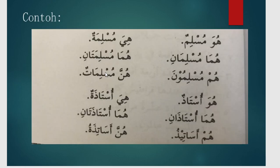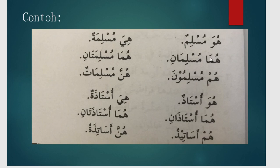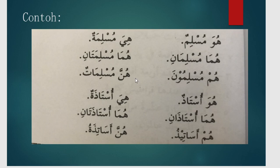Adapun contohnya: Hua muslimun — dia seorang muslim. Ini bentuk kalimatnya mufrad. Bentuk musannanya adalah huma muslimani — mereka berdua adalah dua orang muslim. Selanjutnya hum muslimuna — bentuk kalimatnya jama karena ada hum — mereka adalah orang-orang muslim. Ini untuk kalimat berbentuk mudhakar.